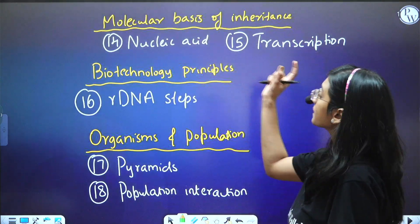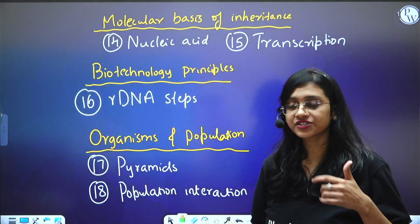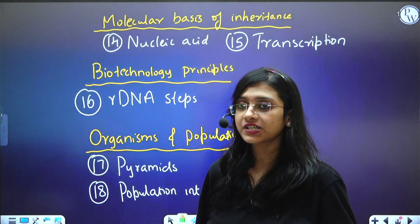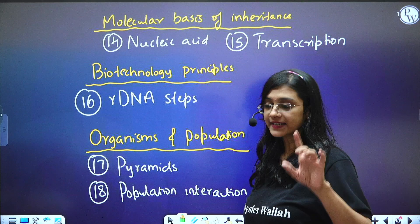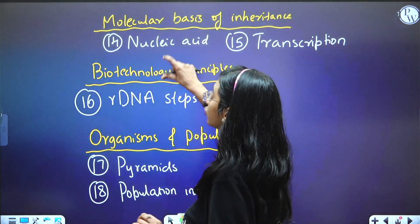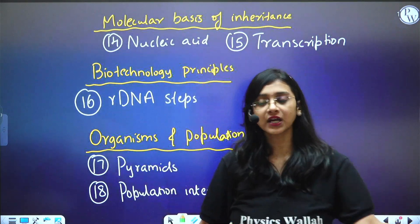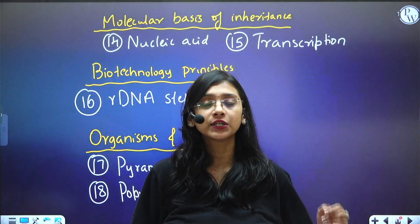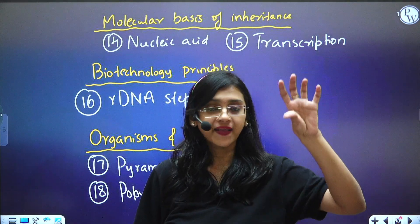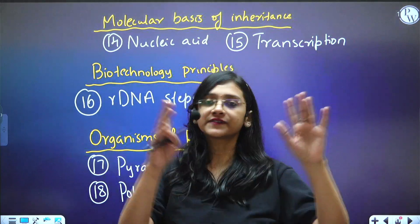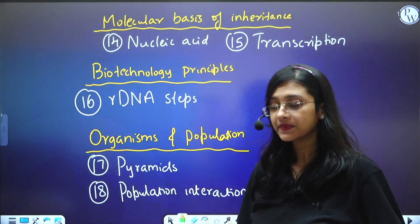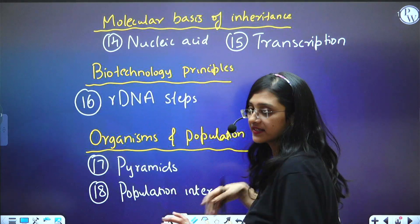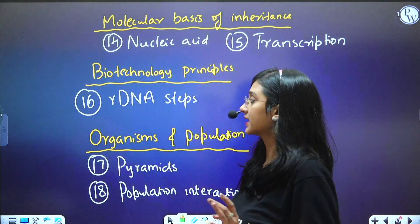Molecular Basis of Inheritance is once again a high-weightage chapter with more questions being asked. From this chapter, transcription and nucleic acids are especially important — everything about both RNA and DNA, their structure, and for DNA specifically the base pair numbers per turn. Questions are being asked continuously from these topics.